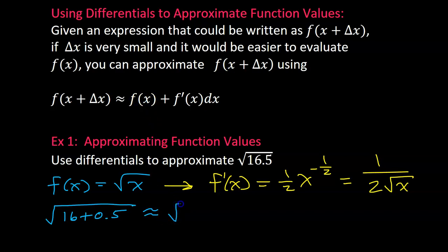So that would simply be the square root of 16. Like I said, the x is the 16. Then we have plus the derivative of x. So we just found the derivative to be 1 over 2 times the square root of x. And again, the x is 16.